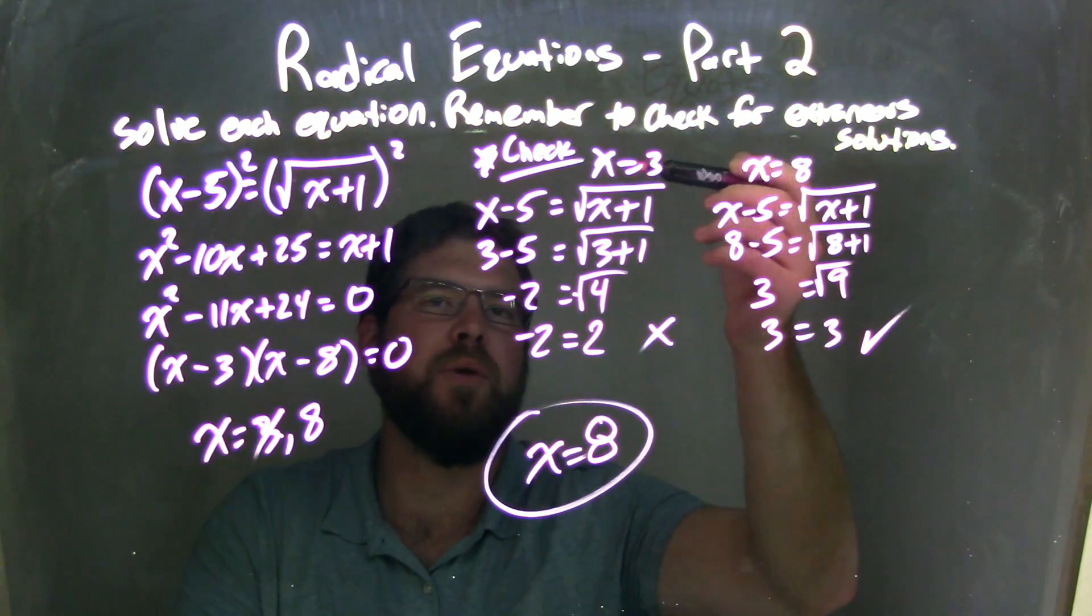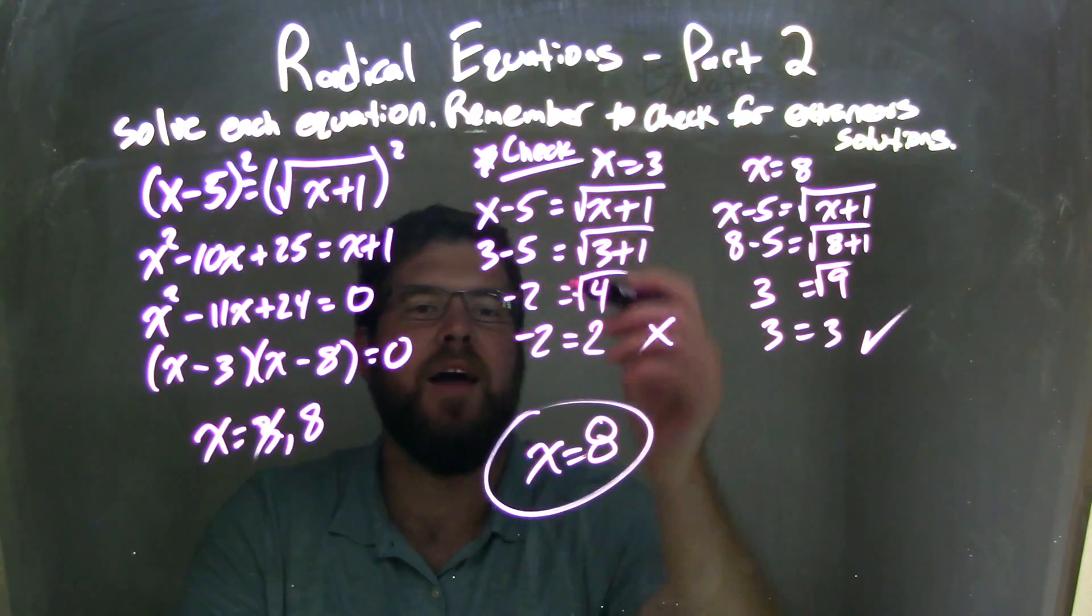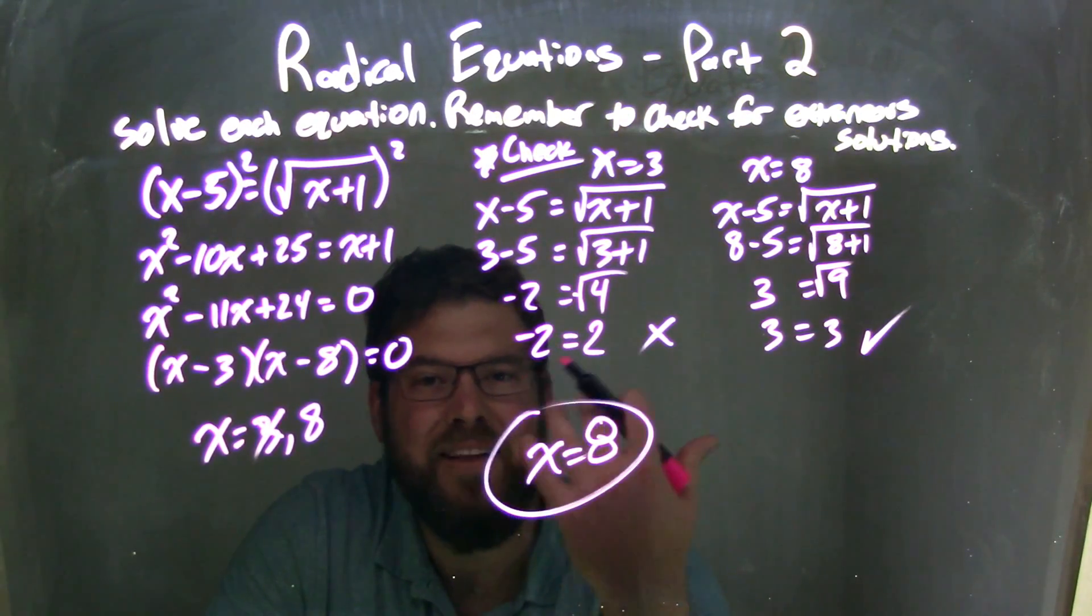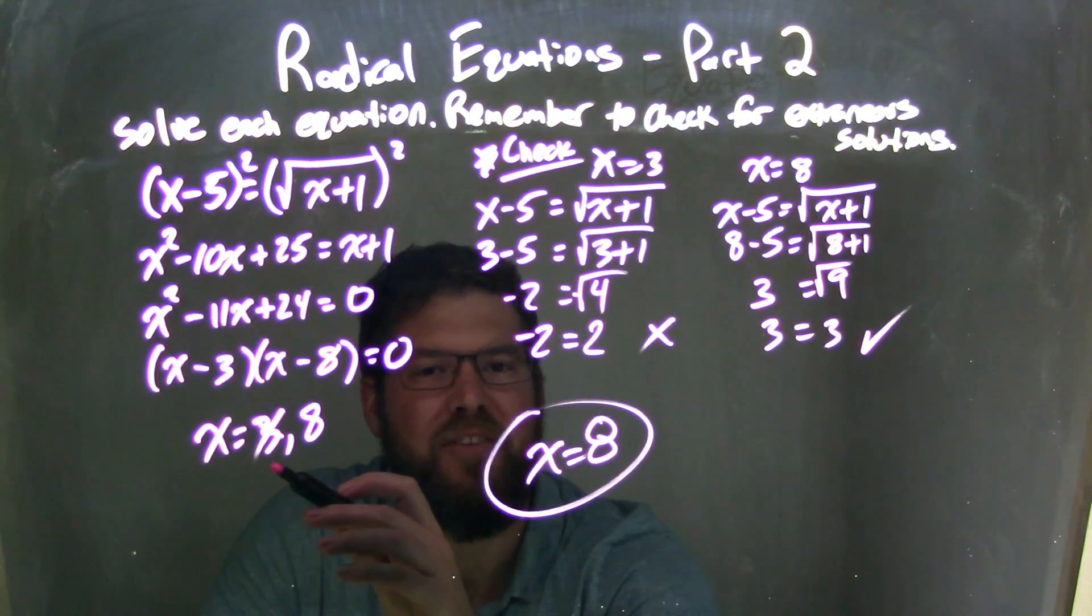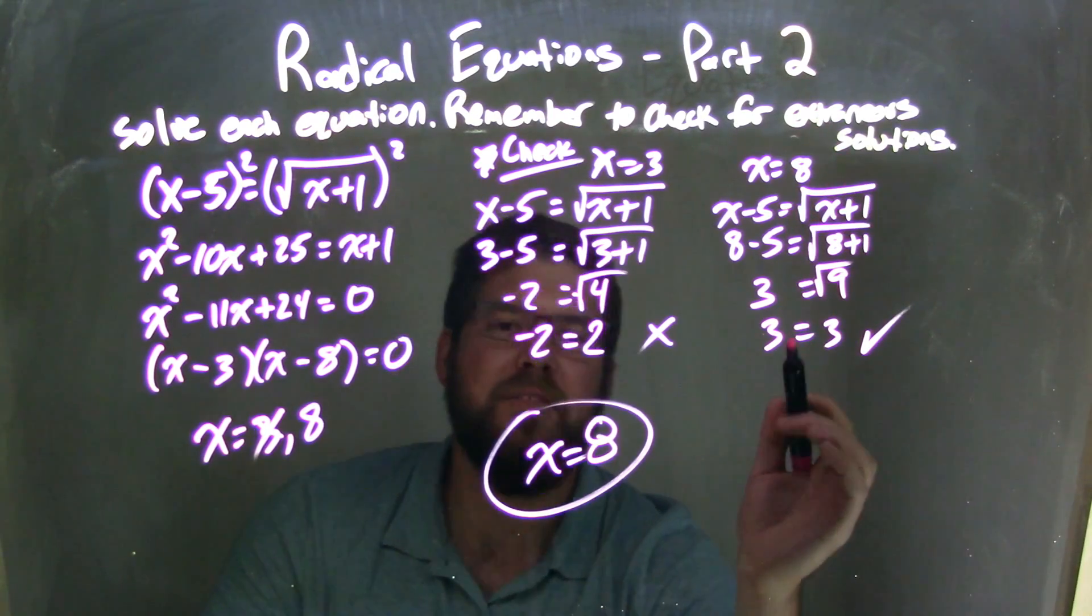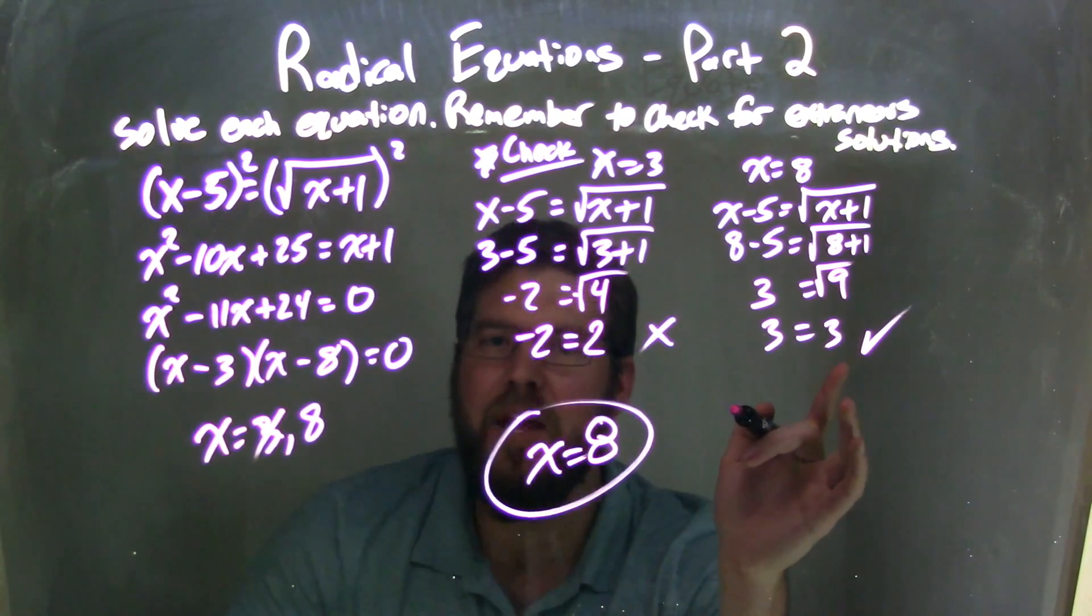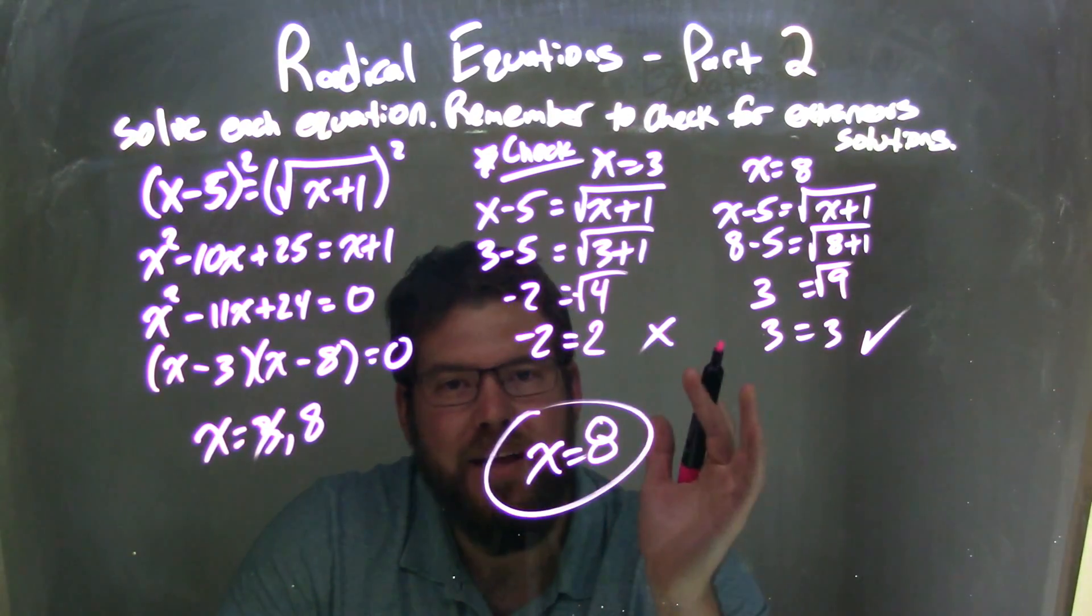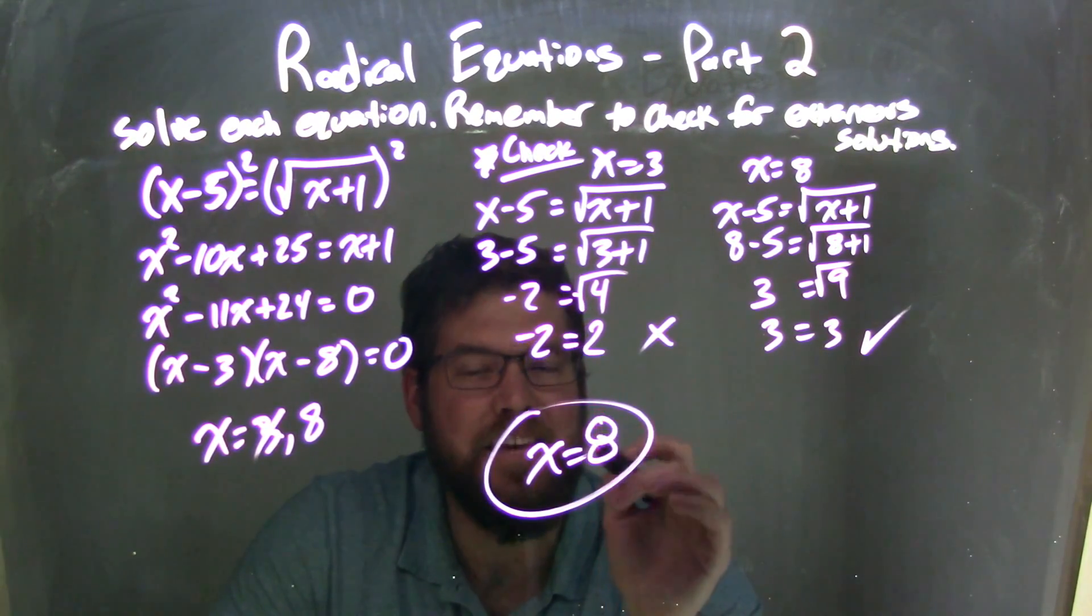I plug x equals 3 into my original equation, simplified, and was left with negative 2 equals a positive 2. They're not equal, right? That's not true, making 3 an extraneous solution. Did the same thing with x equals 8. Substituted it into my original equation. But this time, I got 3 equals 3. That's a true statement, making x equals 8 a real solution. So our final answer here is just x equals 8.